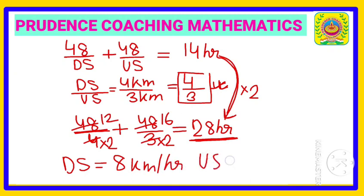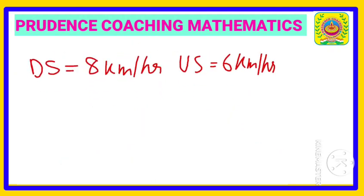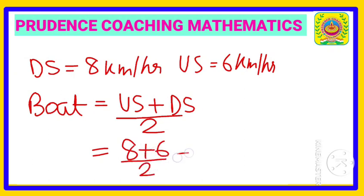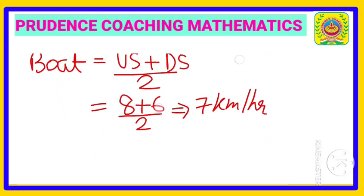So the actual downstream speed is 8 km/h and upstream speed is 6 km/h. The speed of the boat in still water is (upstream + downstream) / 2 = (8 + 6) / 2 = 14 / 2 = 7 km per hour.